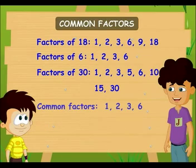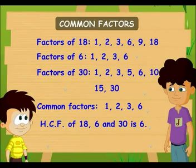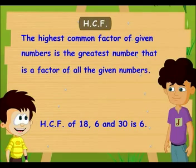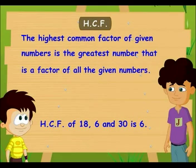Great! Now look at number 6. Out of all the common factors of 18, 6, and 30, 6 is the largest one. This is known as the highest common factor, or HCF — the greatest number that is a factor of all the given numbers. To find the HCF of any given numbers, just list down the factors of all the given numbers and find the common factors. The highest number out of these will be the HCF.